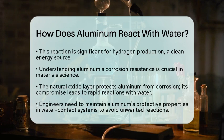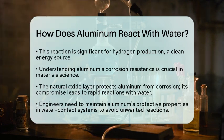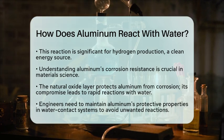In summary, while aluminum is reactive, its interaction with water is largely controlled by the oxide layer on its surface. When this layer is intact, aluminum remains stable. But when it is removed, aluminum can react vigorously, producing hydrogen gas and aluminum hydroxide. Understanding these reactions is important in both chemistry education and practical applications, especially in materials science.